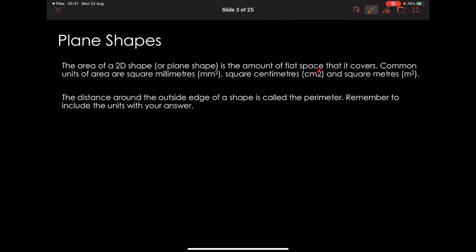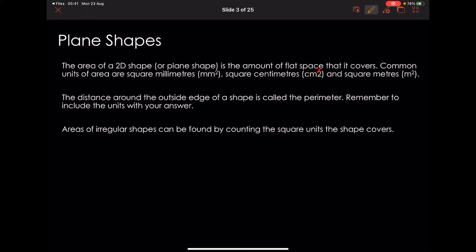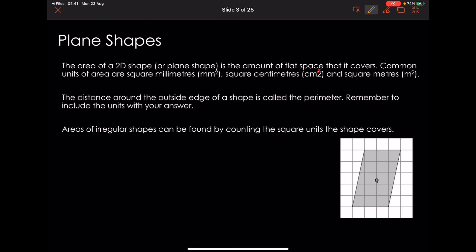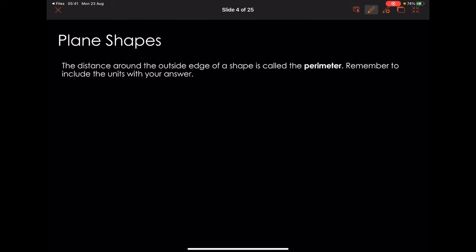Areas of irregular shapes can be found by counting the square units the shape covers. You'll get some questions like this as one-mark questions. Remember, the distance around the outside edge of a shape is called the perimeter, and remember to include the units.